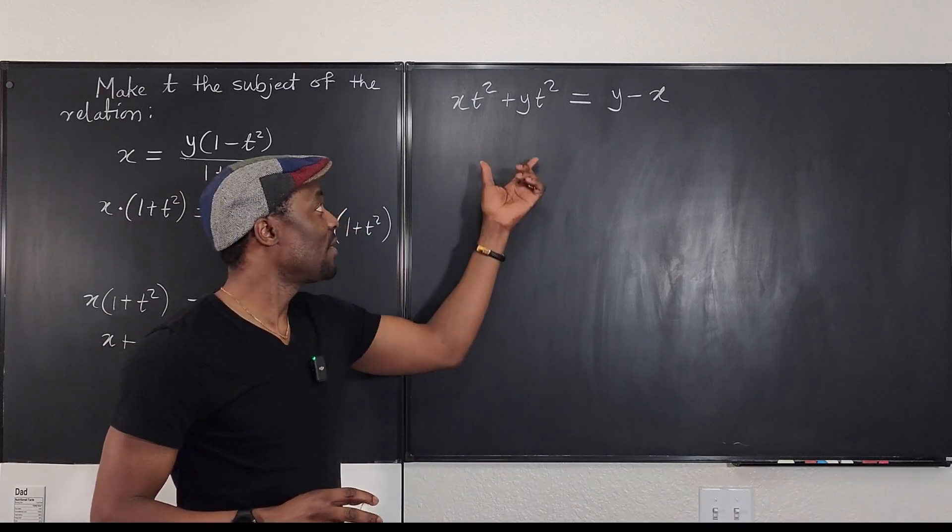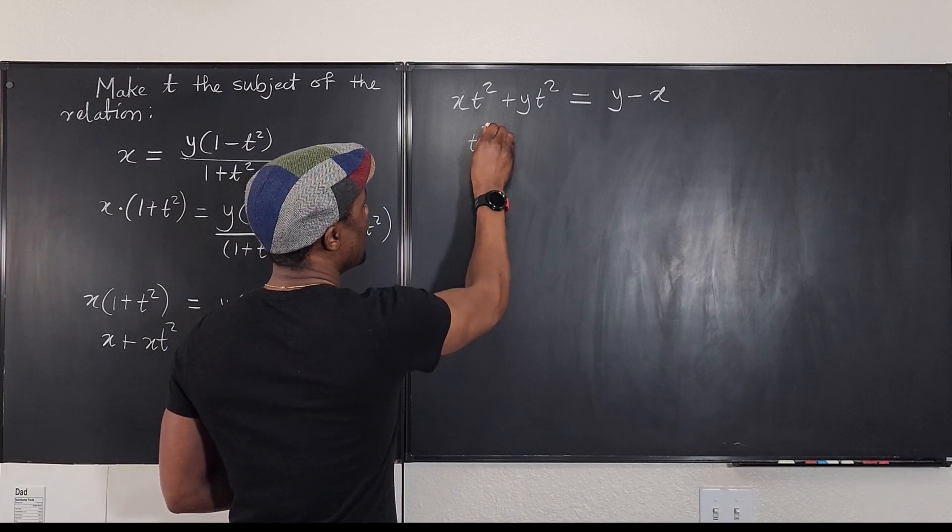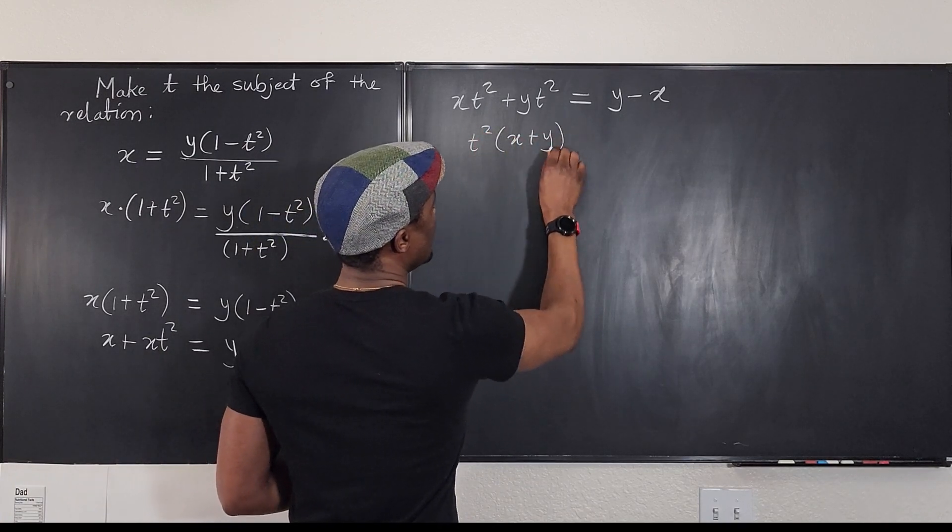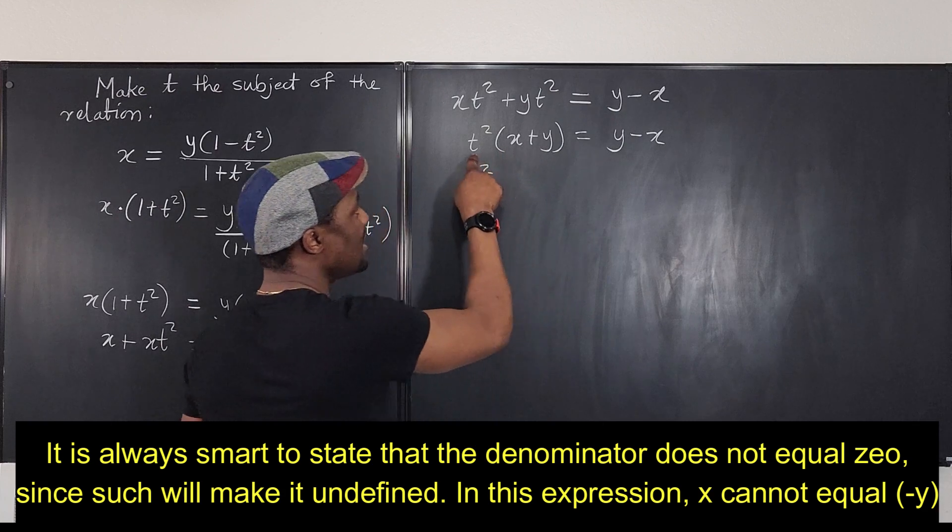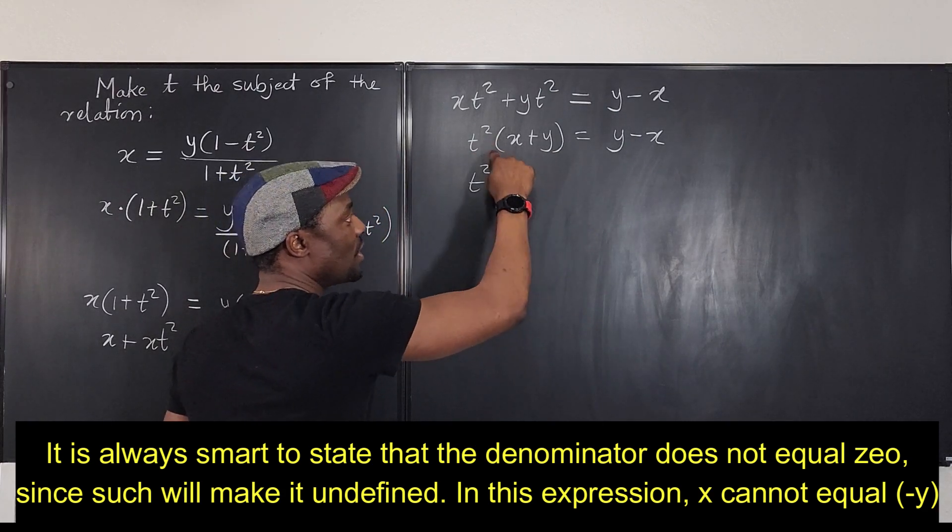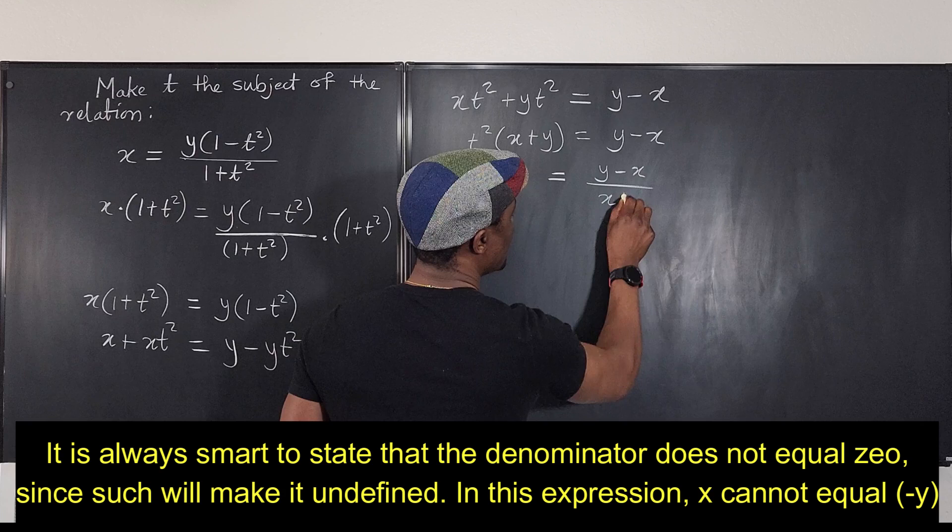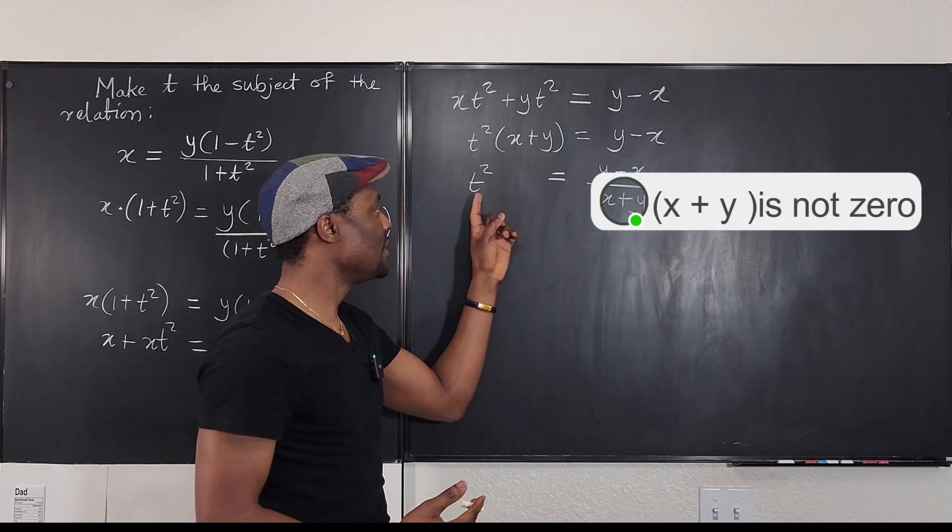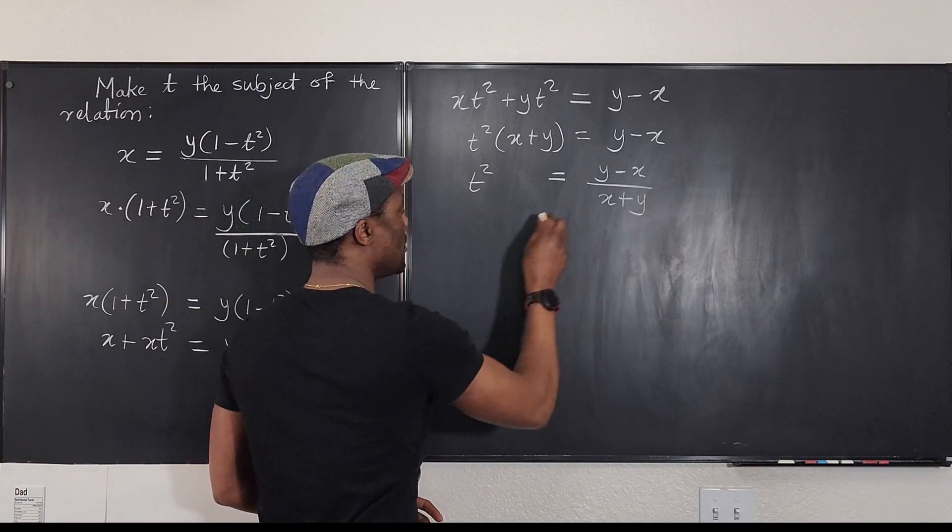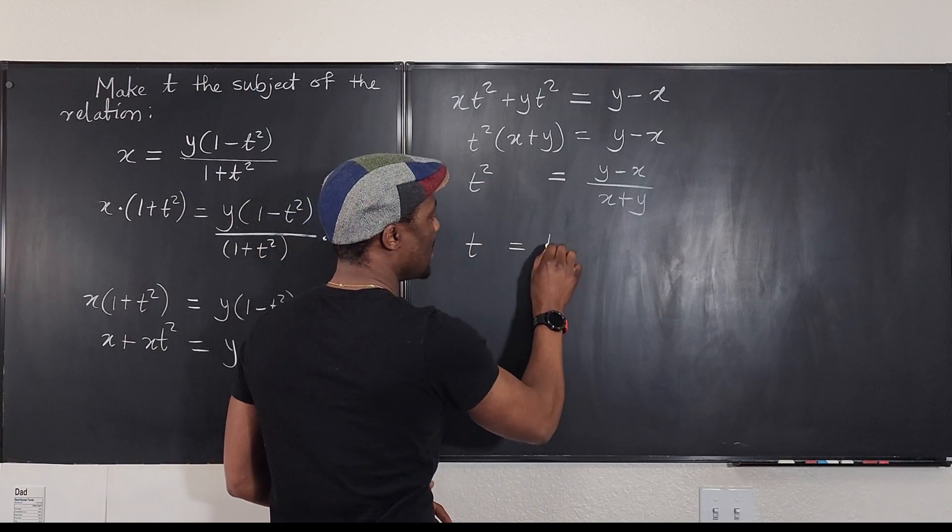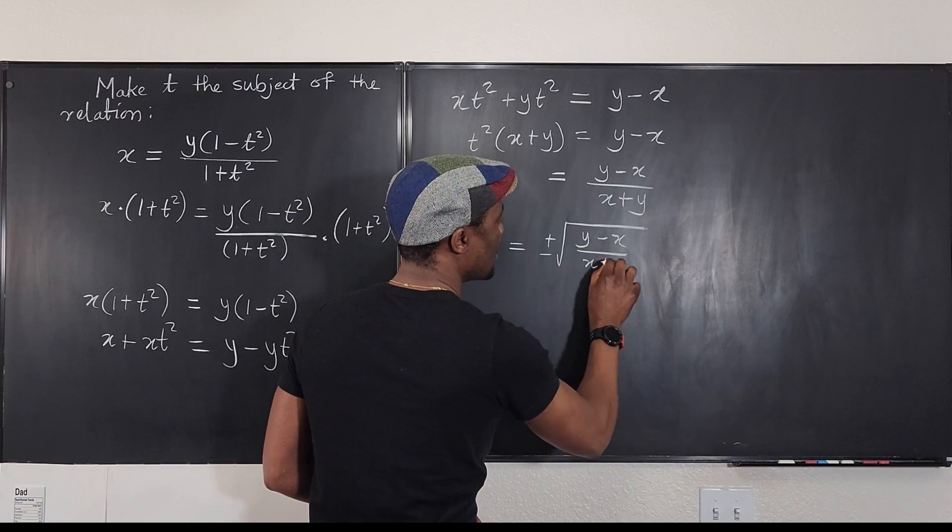And now it's easy for us to isolate T squared. So if we isolate T squared by factoring, T squared into X plus Y is going to be Y minus X. So that we end up with T squared. Now we have to now divide since T squared is a product with this one. So we're going to divide both sides by X plus Y. So T squared currently will be Y minus X divided by X plus Y. We are almost done.